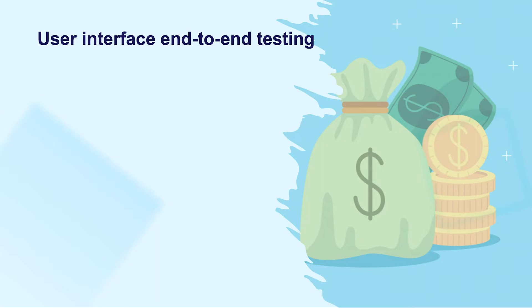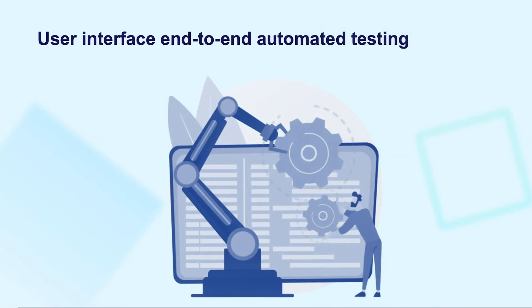Since you need to deploy the complete application to the test environment for your testing activities, this is definitely a costly process. You might also need plenty of end-to-end testing scenarios, from simple to complex, to satisfy both functional and non-functional requirements. Regression test suites are usually automated to run faster, in parallel, and consistently. Among popular frameworks, Selenium has constantly been among the top choices for UI end-to-end testing.